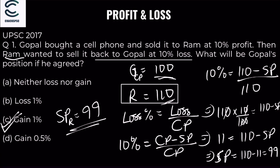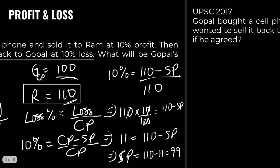Gopal originally spent 100 and now gets it back by paying 99, so he gains 1 rupee — a 1% gain overall. So Gopal ends up with a profit from this transaction.